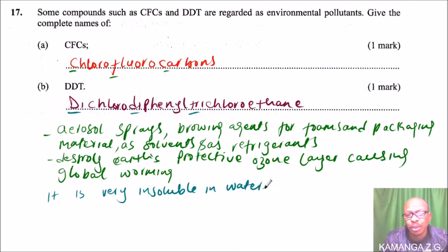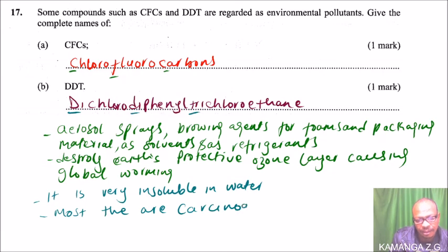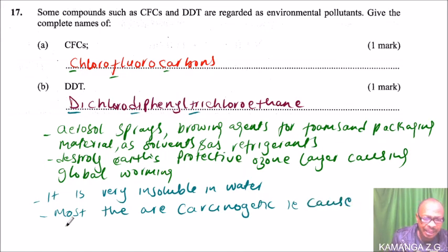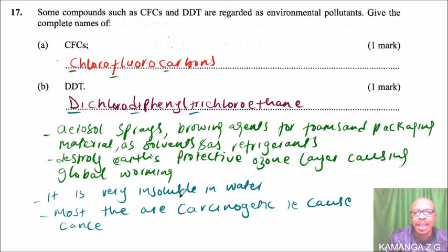Because it does not dissolve in water, it destroys the environment. Most DDT compounds are carcinogenic — that is, they cause cancer. Nowadays you can see many people suffering from cancer, and some causes are substances like DDT, although there are many other substances that also cause cancer. That is how you answer that question.